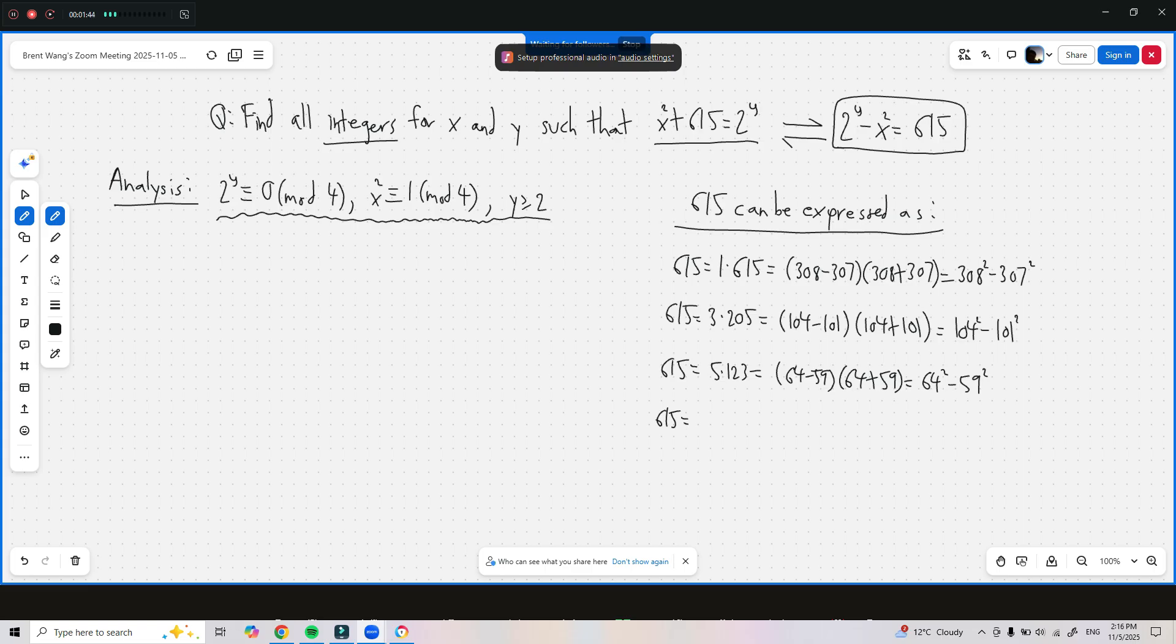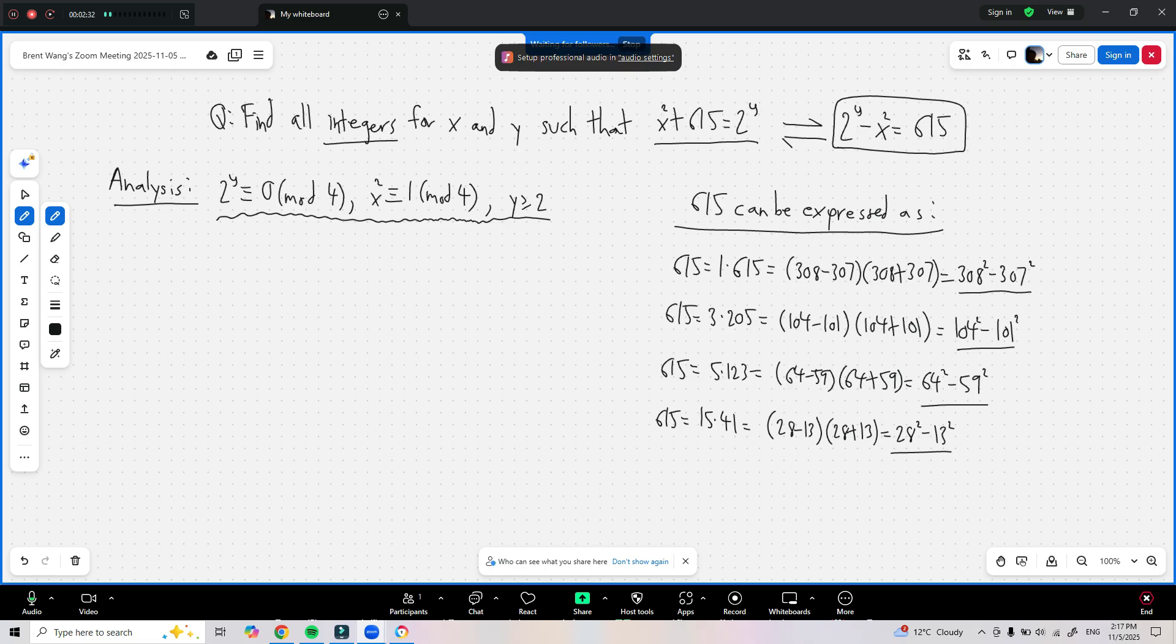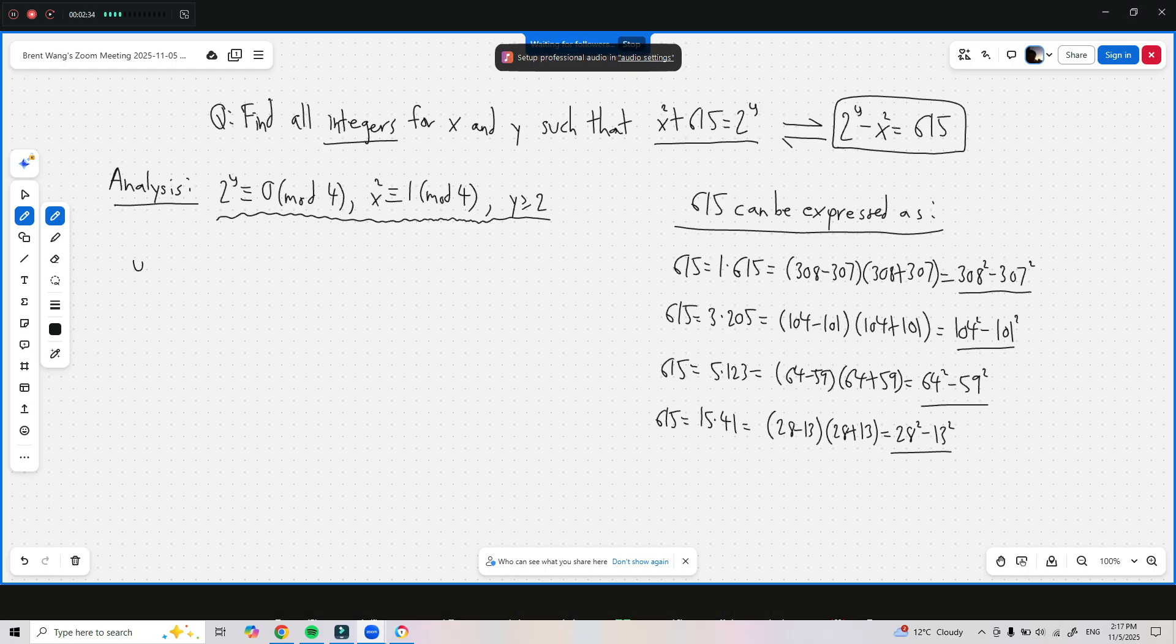And lastly, 615 can equal 15 times 41, which is equal to 28 minus 13 times 28 plus 13, which is equal to 28 squared minus 13 squared. These are the four ways you can express 615 in terms of a difference of squares. Now the best way to approach this is to look at the variable 2 to the power of y and see what outputs you get from it.